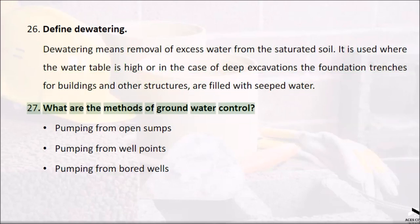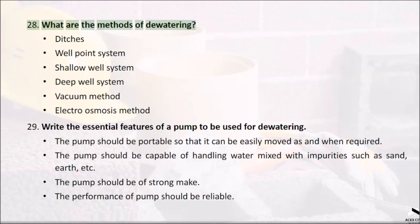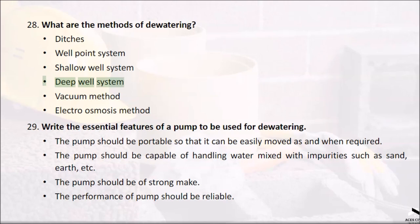Question 27: What are the methods of ground water control? Pumping from open sumps; pumping from well points; pumping from bored wells. Question 28: What are the methods of dewatering? Ditches; well point system; shallow well system; deep well system; vacuum method; electro osmosis method.